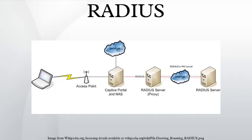Proxy operations: when a RADIUS server receives an AAA request for a username containing a realm, the server will reference a table of configured realms. If the realm is known, the server will then proxy the request to the configured home server for that domain. The behavior of the proxying server regarding the removal of the realm from the request is configuration-dependent on most servers. In addition, the proxying server can be configured to add, remove, or rewrite AAA requests when they are proxied.